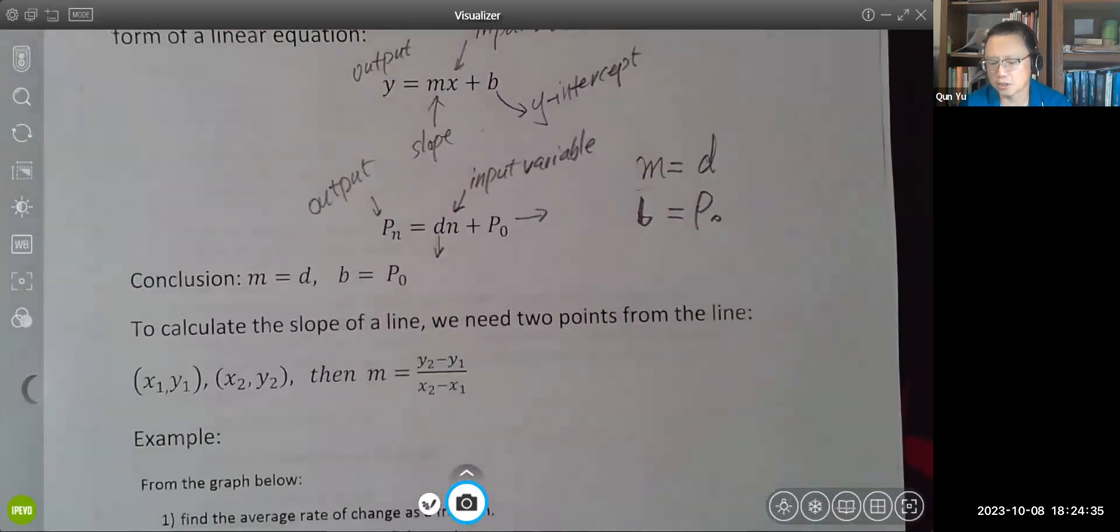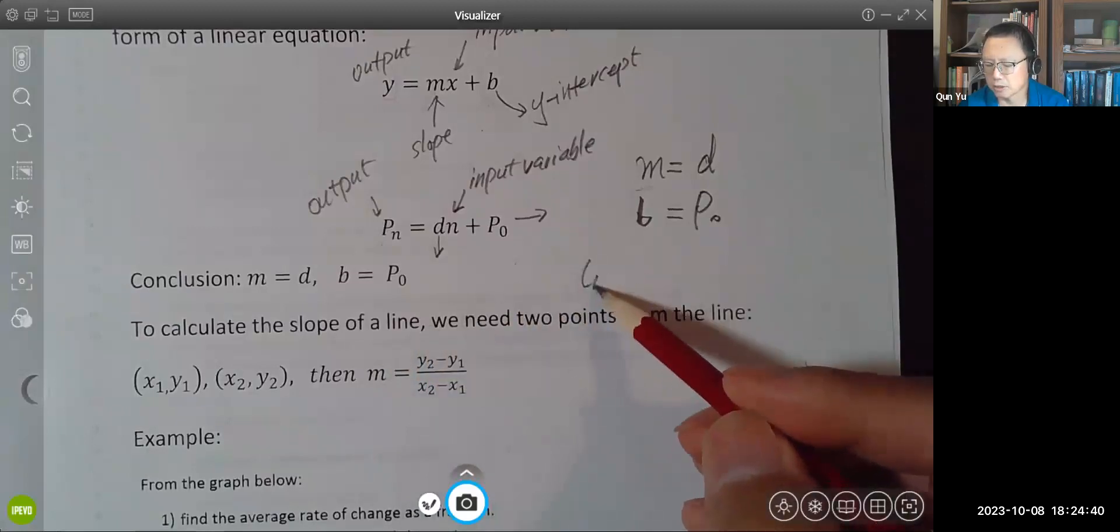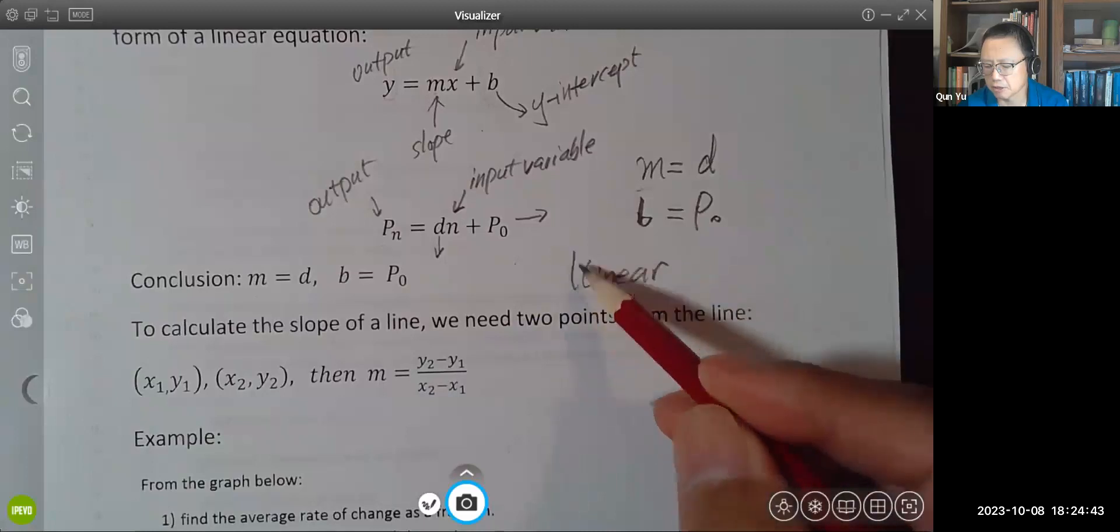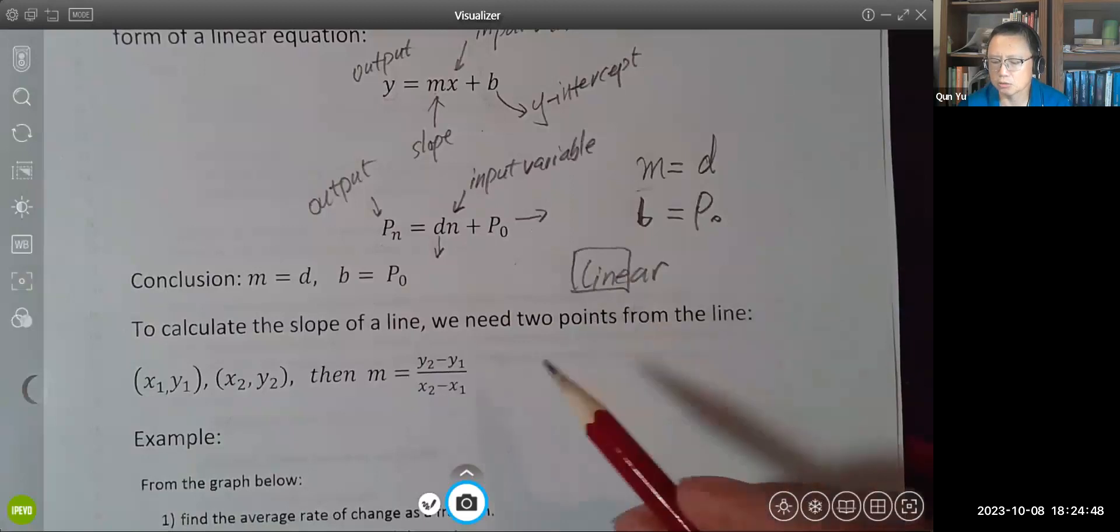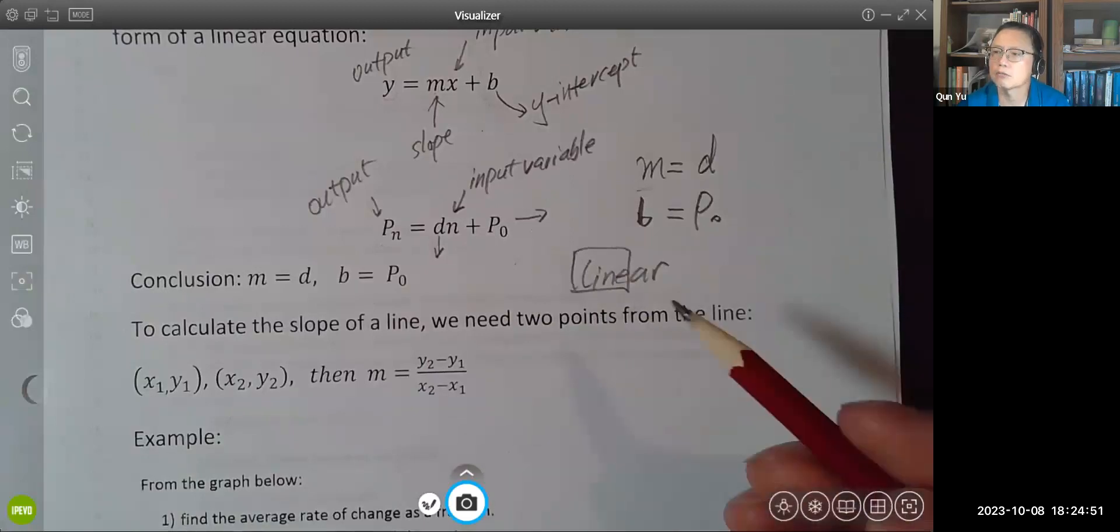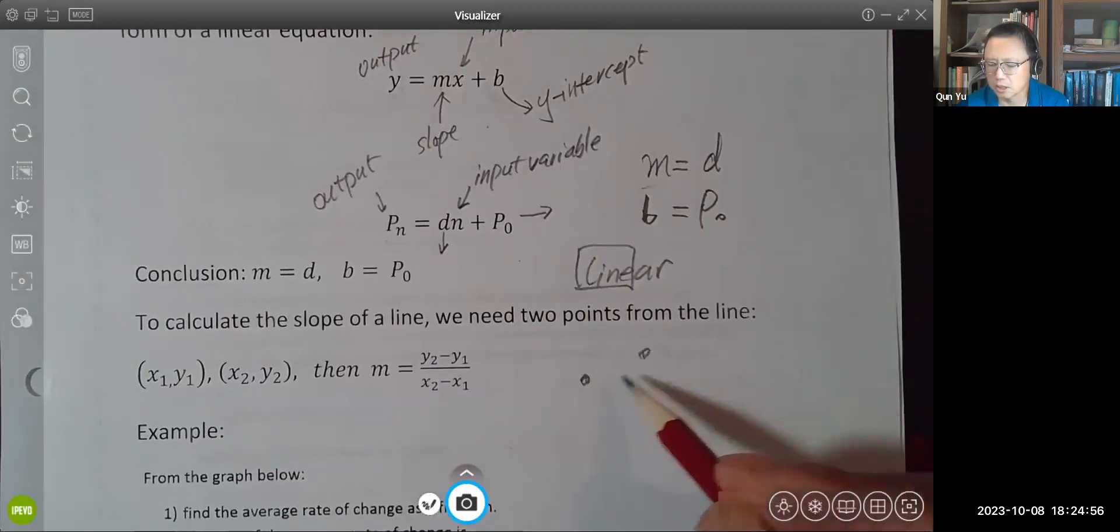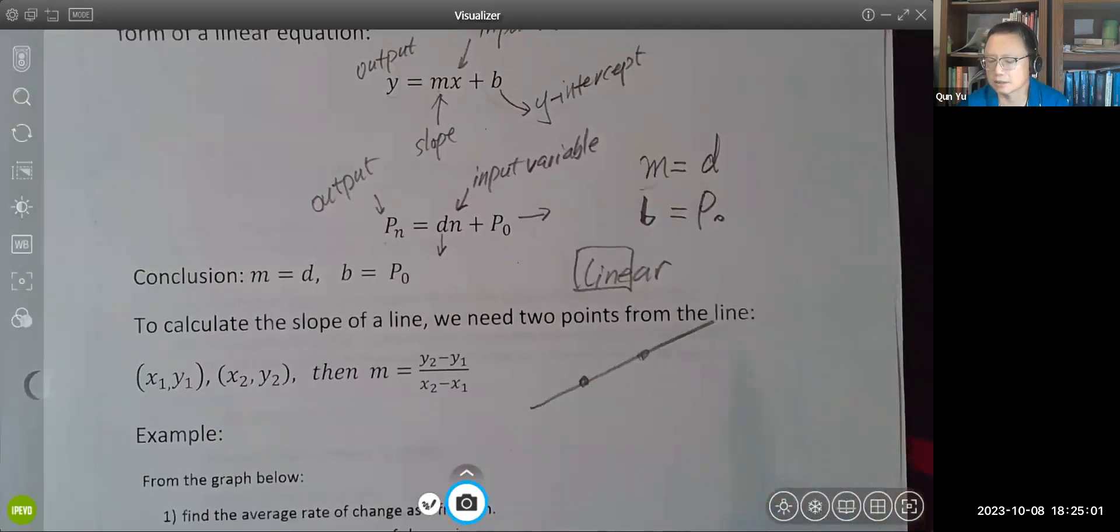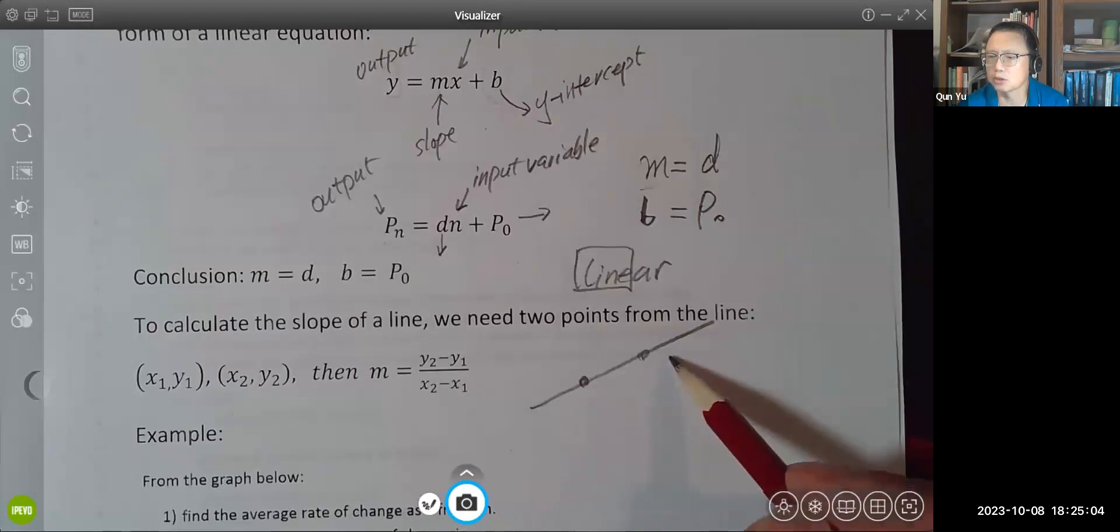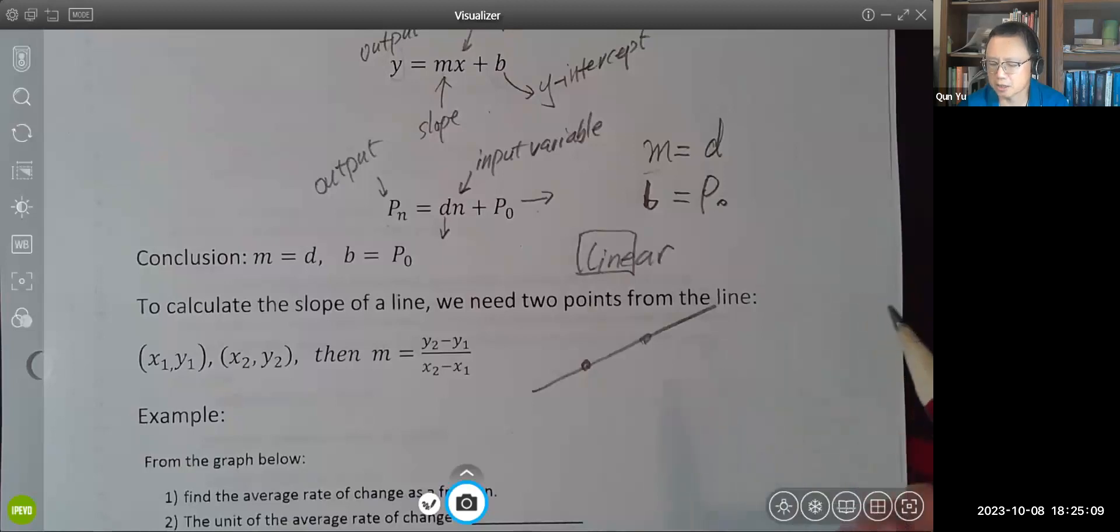Now in order to calculate the slope of a line, because the linear model's graph is a straight line, look at this word linear, the first four letters. So the graph is a straight line. In order to calculate the slope of a straight line, we need to have two points from that line. So if you have two points, by connecting these two points you get a straight line, and this line is unique. There's no second line that can go through the same two points, and that is why having two points we have enough information to calculate the slope of the line.